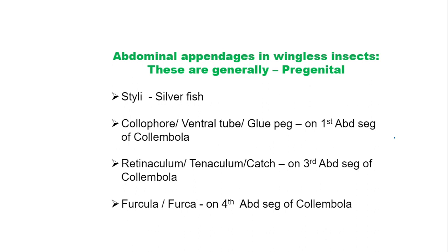In wingless insects, the abdominal appendages are generally pre-genital, meaning they are present just before the genital organ. There are no appendages after the genital organ. The abdominal appendages in wingless insects include styli in silverfish,